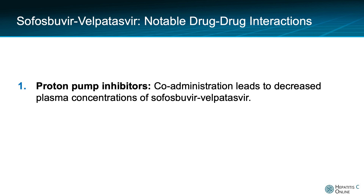The most common drug-drug interaction seen with sofosbuvir-velpatasvir is an interaction with proton pump inhibitors, or PPIs. Co-administration of PPIs and sofosbuvir-velpatasvir is not recommended, as this leads to decreased plasma concentrations of sofosbuvir-velpatasvir. H2 receptor antagonists may be co-administered with sofosbuvir-velpatasvir as long as the doses do not exceed doses comparable to famotidine 40 mg twice daily.